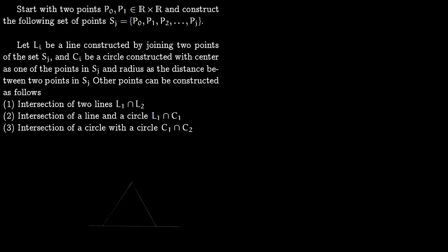In this lecture we talk about geometric impossibilities. Say you start with two points on the plane, P0 and P1. We have the Cartesian plane R×R and you construct a set of points P0, P1, P2 all the way to Pj.